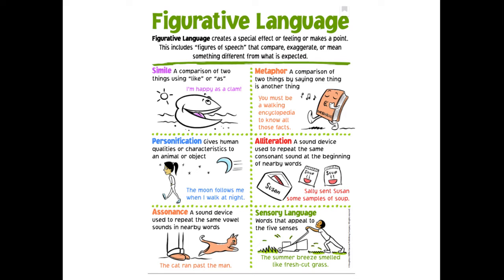Another figure of speech is a metaphor. A metaphor is a comparison of two things by saying one thing is another thing. It's also known as a direct comparison. For example: 'The full moon is a silver dollar in the sky.' You know that a silver dollar is round and shiny, so you can picture the full moon also as round and shiny.